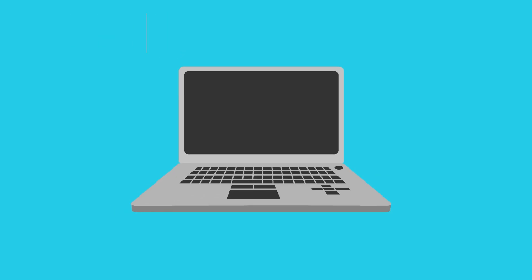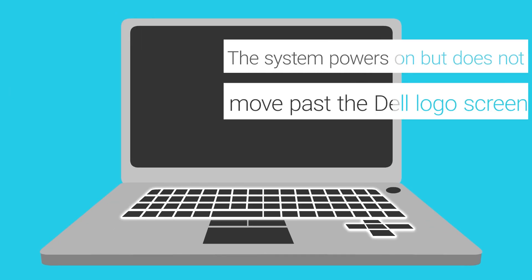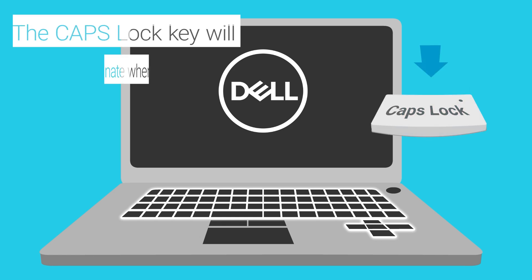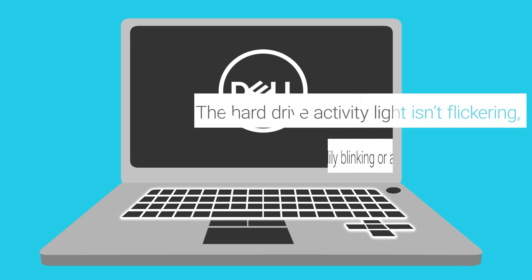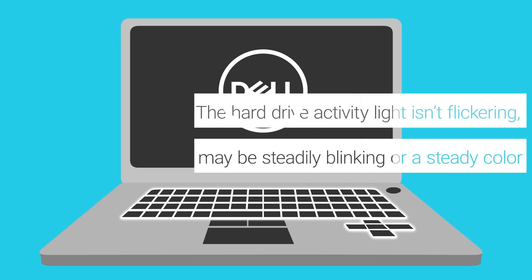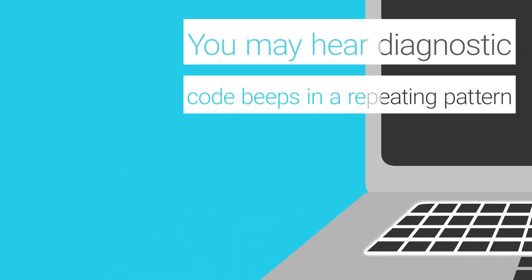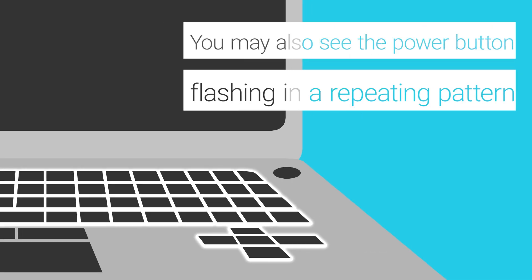The system powers on but the screen appears blank. The system powers on but does not move past the Dell logo screen. The Caps Lock key will not illuminate when toggled. The hard drive activity light isn't flickering — maybe steadily blinking or a steady color. You may hear diagnostic code beeps in a repeating pattern.